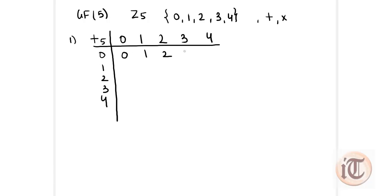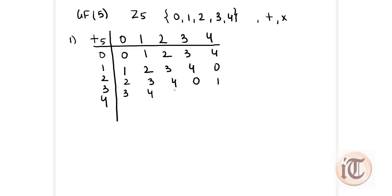Filling the addition modulo 5 table: 0+0=0, 0+1=1, 0+2=2, 0+3=3, 0+4=4. Then 1+1=2, 2+1=3, 3+1=4, 4+1=5 so mod 5 gives 0. For row 2: 2+0=2, 2+1=3, 2+2=4, 2+3=5 so remainder 0, then 4+2=6 so 6 mod 5=1. For row 3: 3+0=3, 3+1=4, 3+2=5 remainder 0, 3+3=6 remainder 1, 4+3=7 remainder 2. For row 4: 4+0=4, 4+1=5 mod 5=0, then 1, 2, 3.